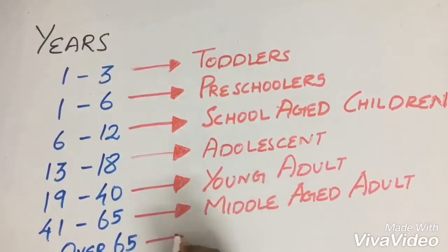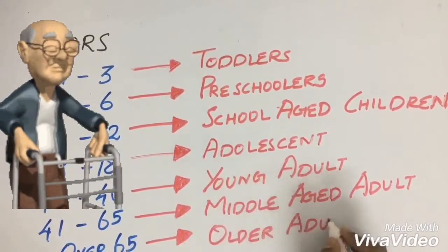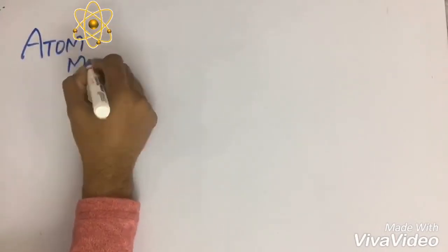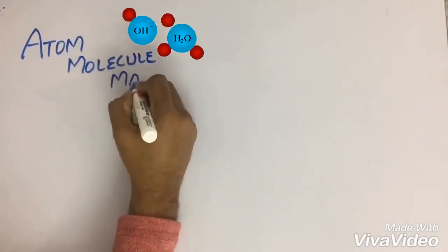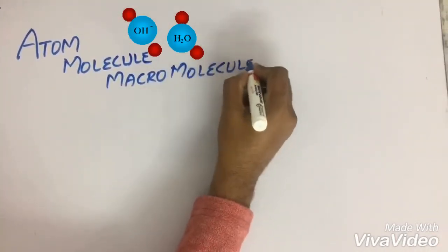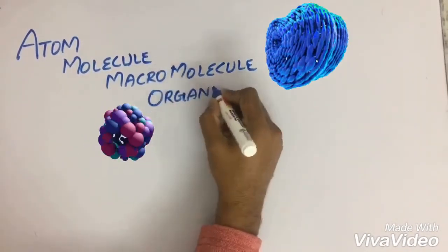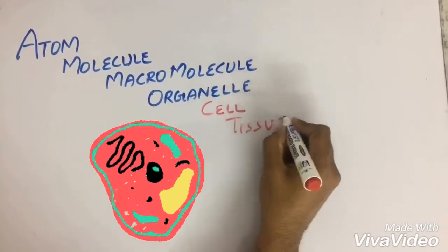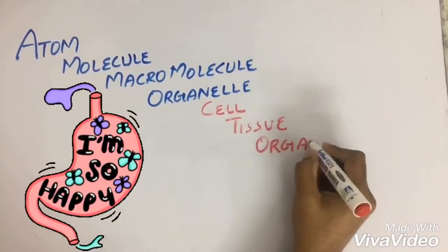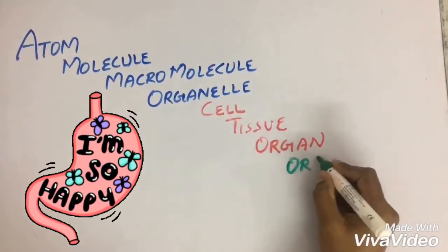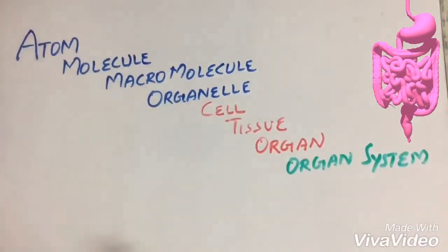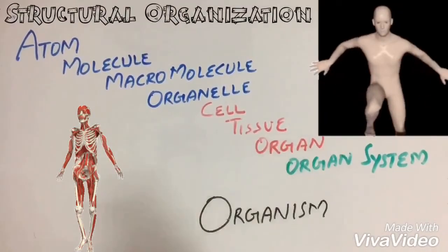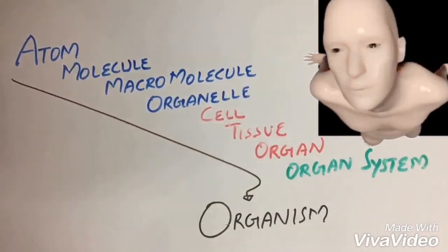Let's learn how our body is organized: atom, molecules, macromolecules form organelle and cell, tissue, and then organ, then organ system, then altogether form organism.